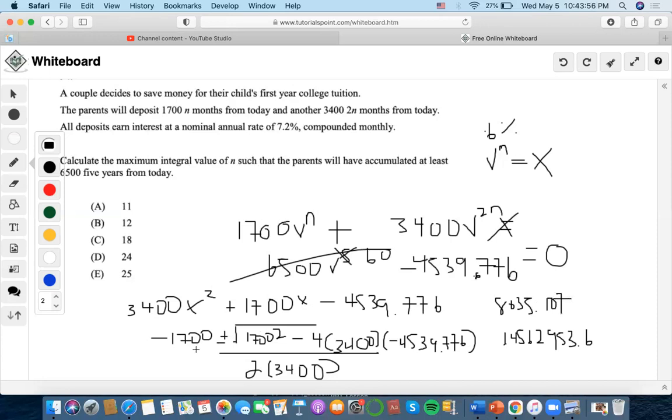Now, we have a 1700 here. We're going to do negative 1700 plus 8035.107.